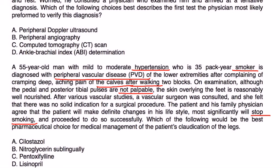Which of the following would be the best pharmaceutical choice for medical management of the patient's claudication of the legs? Claudication relief is a big part of treatment of peripheral arterial disease, and the very best medication for that is cilostazol, which would be choice A.